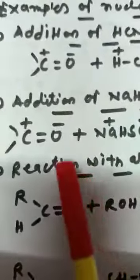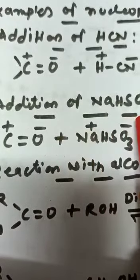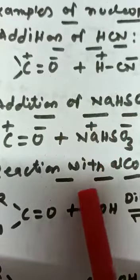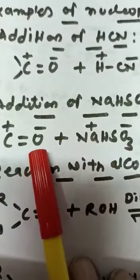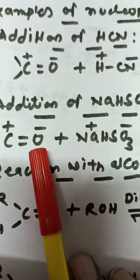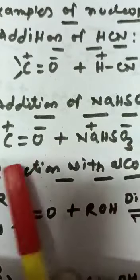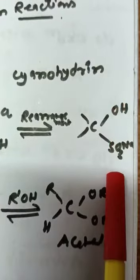The second reaction is addition of sodium bisulphite. Sodium bisulphite: the Na-positive part is combined with oxygen ion and HSO3 is combined with carbon. By rearrangement, the Na and hydrogen exchange positions and gives final product, the addition product of sodium bisulphite.